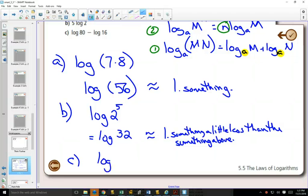So that gives us log of 80 divided by 16, which is equal to log of 5, which is approximately 0 point something.